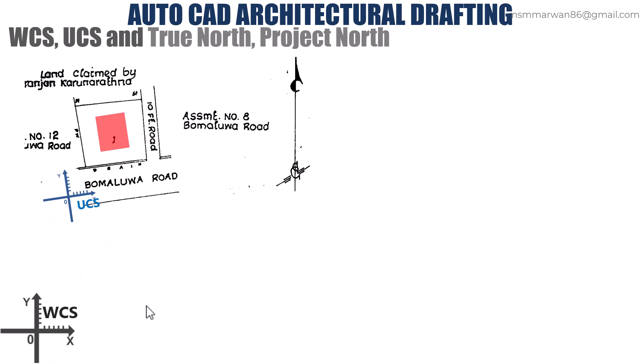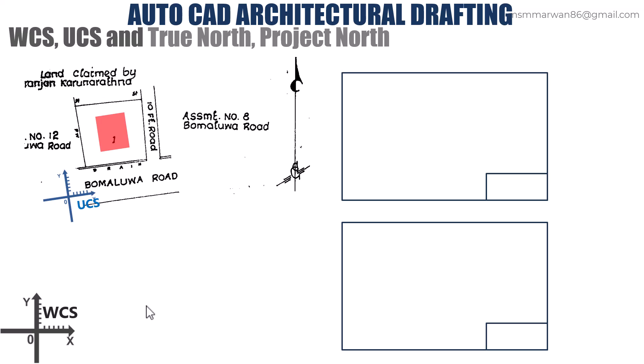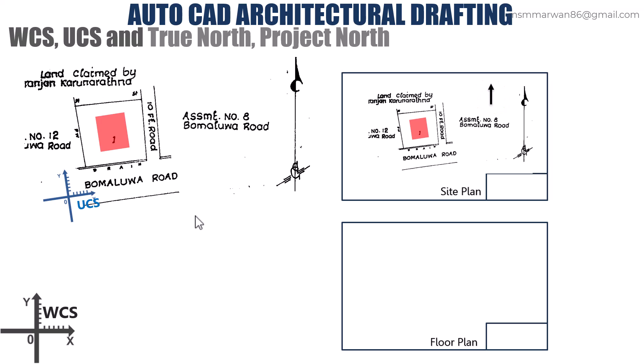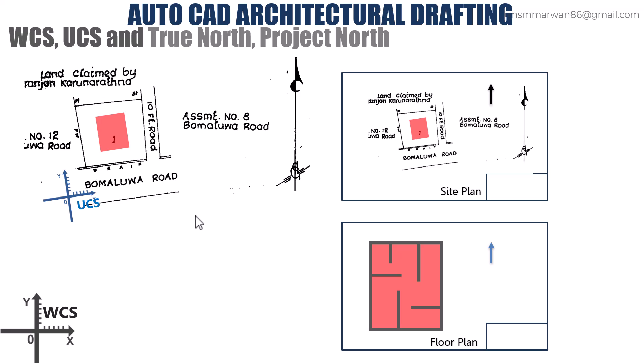Next we'll talk about drawing preparation. I have two drawing sheets here — one is the site plan and the other is for floor plan development. The site plan goes into the site plan sheet. The site plan is always as per the true north, and using an arrow I'll mark the true north. The floor plans in a drawing sheet will be aligned as per the direction of the building — as per the UCS. So I'll mark here the project north. The site plan will be as per the true north and the floor plans will be developed as per the project north.